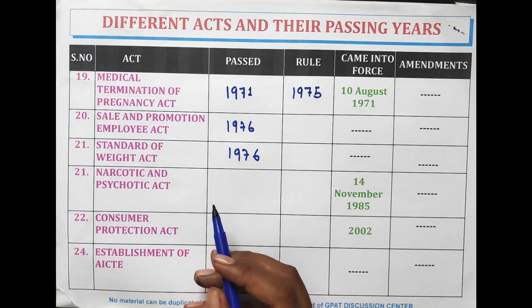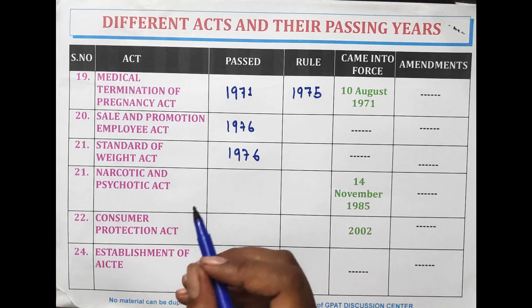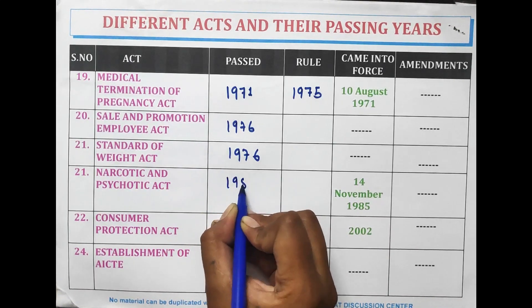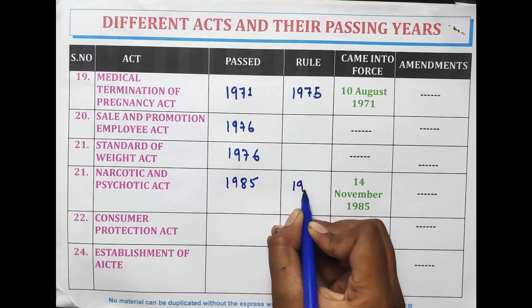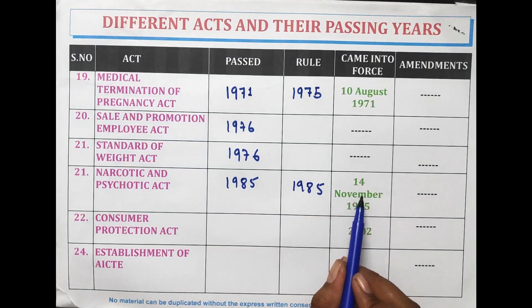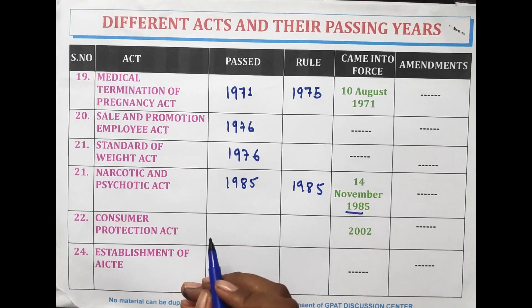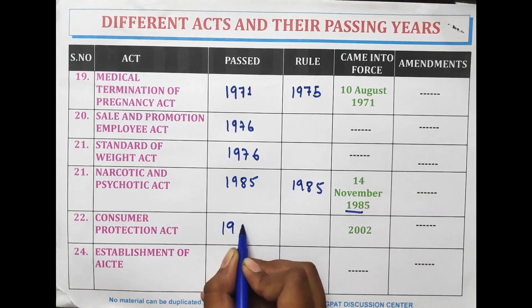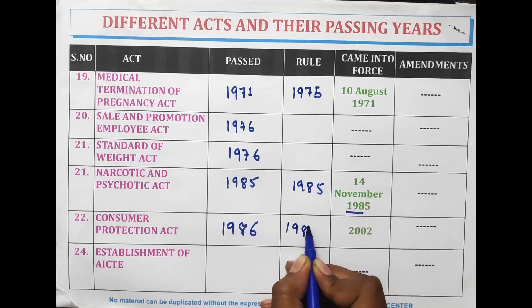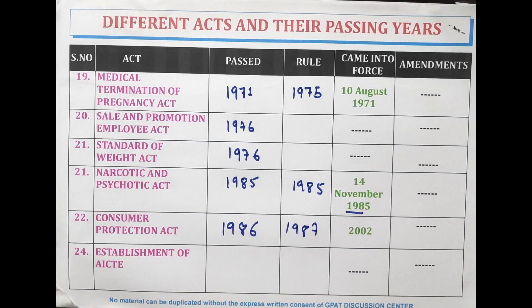The Narcotic and Psychotropic Act was passed in 1985 and rules in 1985, came into force on 14th November 1985. The Consumer Protection Act was passed in 1986 and rules in 1987, and came into force in 2002.